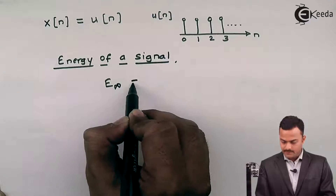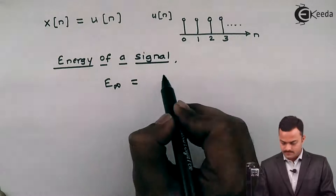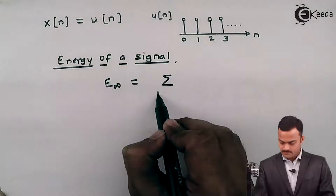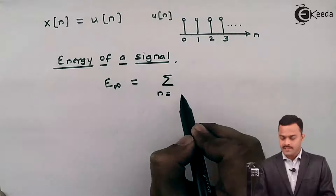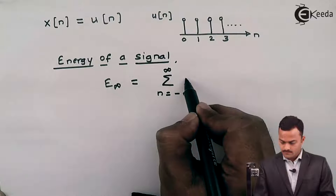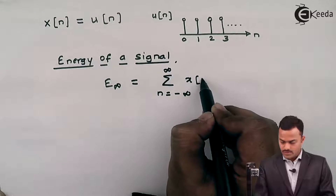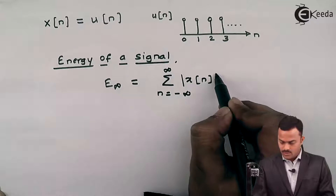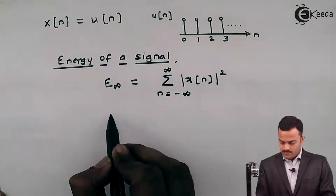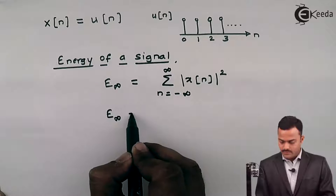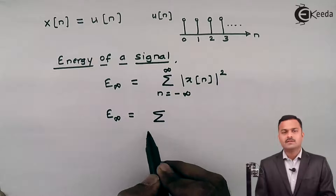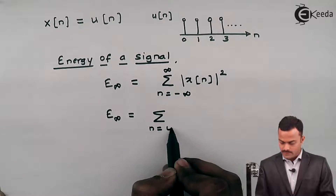E∞ equals summation from n = -∞ to +∞ of |x(n)|². Now since the signal exists only from 0 to infinity, I will cut short the summation limit from 0 to infinity.